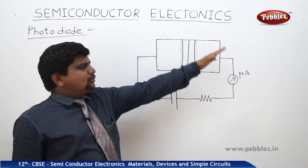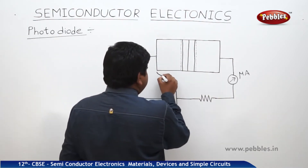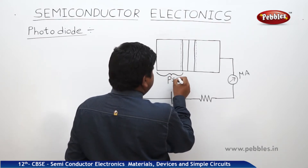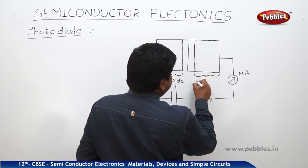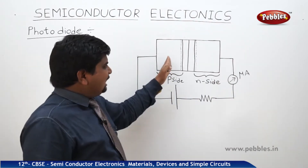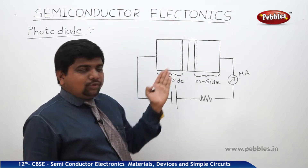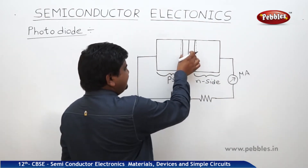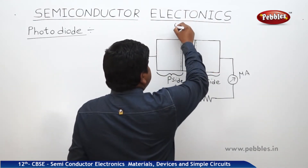This is the structure of the photodiode. Here it is the P side, and here it is the N side. One P-type semiconductor and one N-type semiconductor are joined together, and this is the depletion region. At this depletion region, one light is incident.